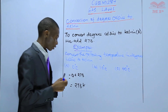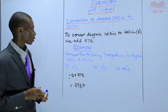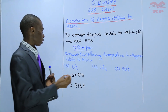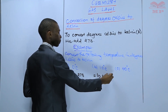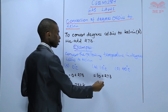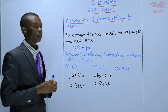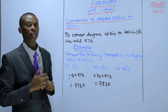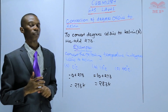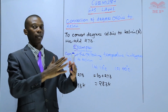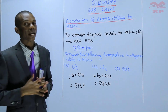The second, we have 10 degree Celsius. Again, to convert, we just need to add 273 to 10. So it will be 10 plus 273, which gives us 283 Kelvin. Therefore, 10 degree Celsius is equivalent to 283 Kelvin.